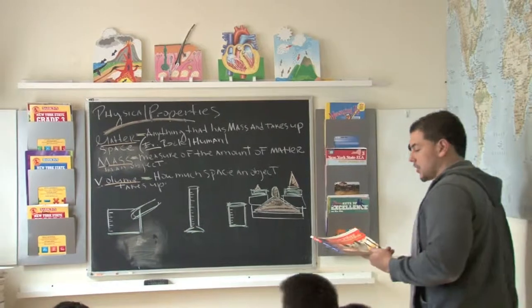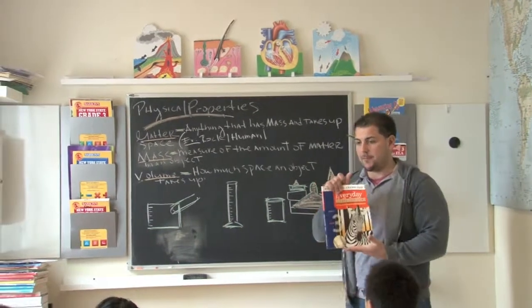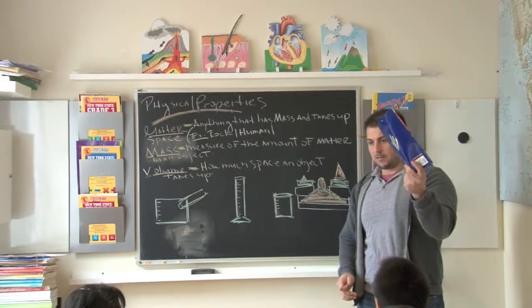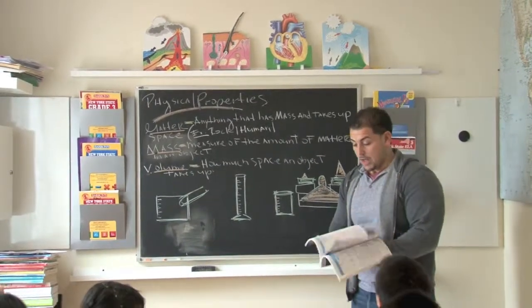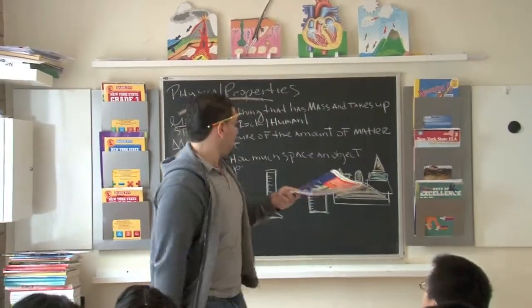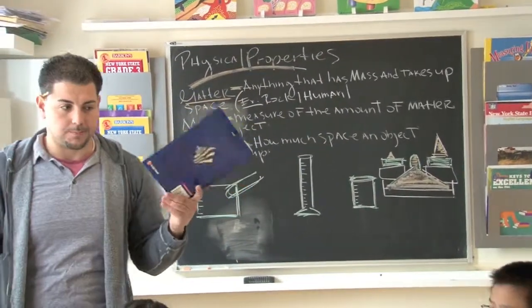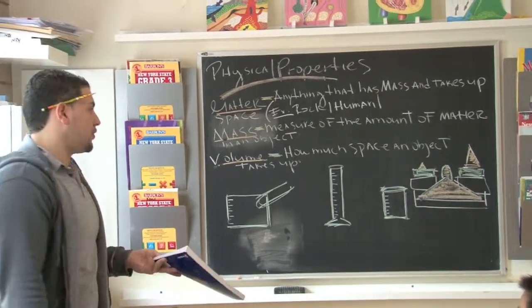Now, looking at this book, right? We all agree that this book is made up of matter, right? Okay? It has matter? Actually, it has matter. That's correct. So now, how do we know the amount of matter that's in here? What do we have to do? Measure it. You got to measure it, right?